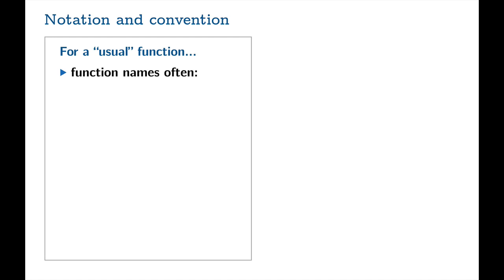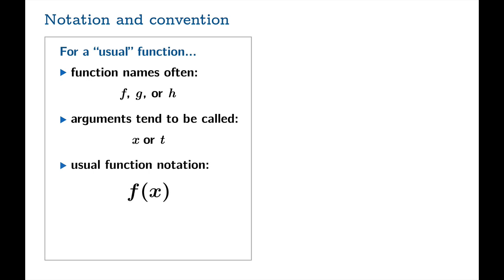But there's all sorts of notation and convention that have been wrapped around sequences. So for usual functions, function names, we're not very creative. They're always F or G or H. And for arguments, we're even less creative. It's usually X, maybe T. And usual function notation is for the argument X, the value there would be F of X. Well, for a sequence, even though a sequence is a function, we've developed different ways of thinking about these kinds of functions.